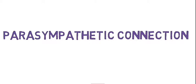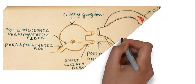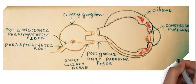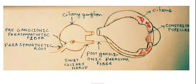First, the parasympathetic connection. Preganglionic parasympathetic fibers start from the Edinger-Westphal nucleus, which is a parasympathetic nucleus. They travel with the third nerve, enter the ciliary ganglion, and terminate here.